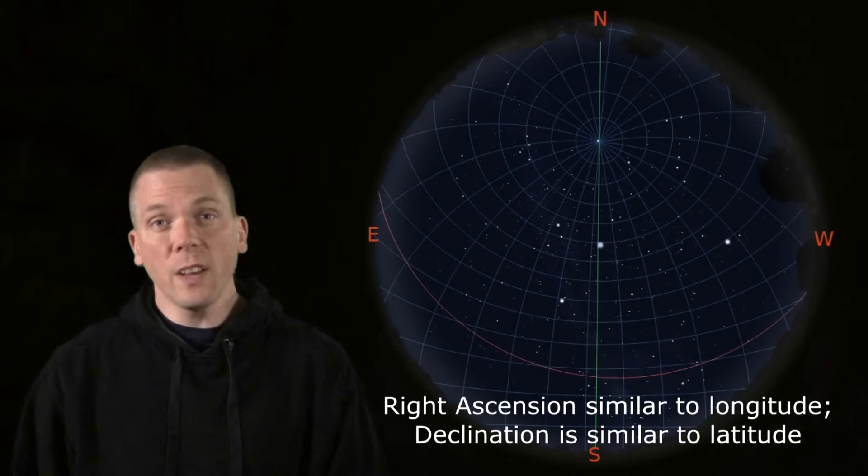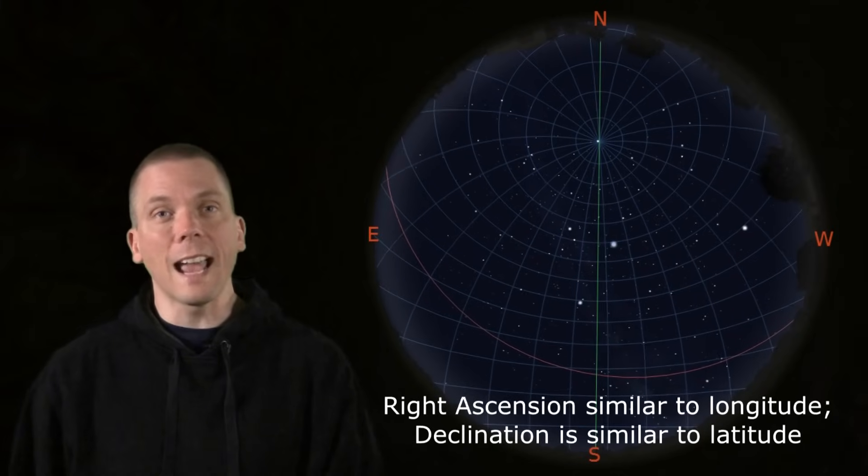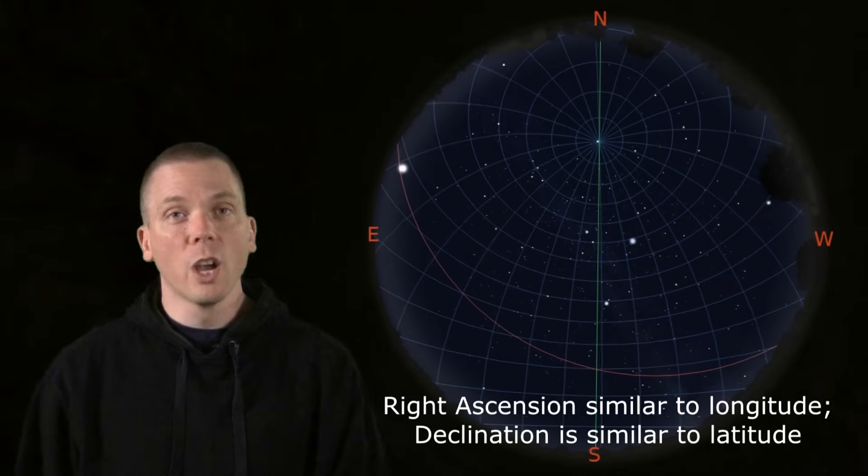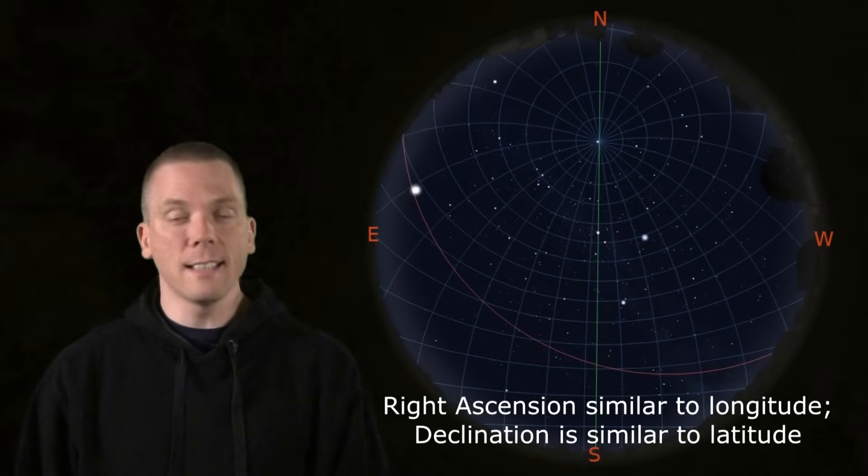The celestial sphere uses similar coordinates as longitude and latitude, but are called Right Ascension and Declination.